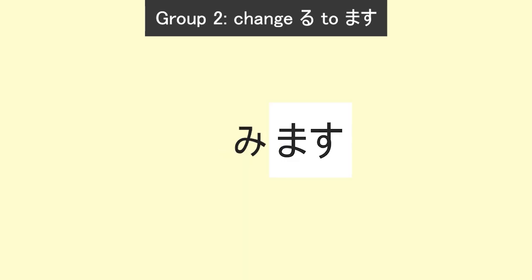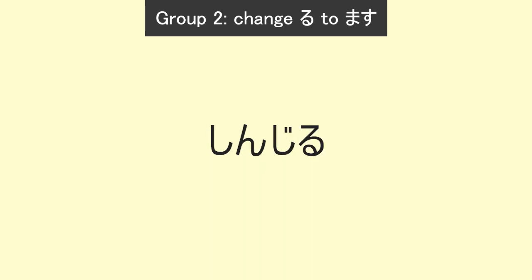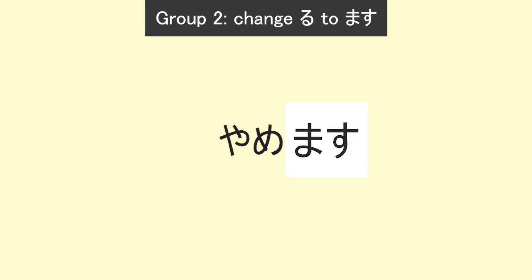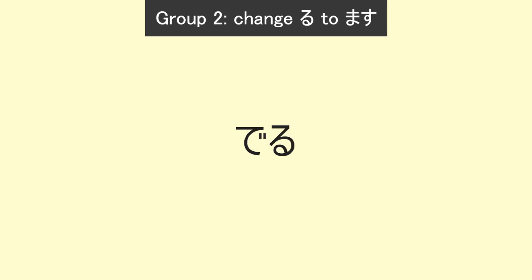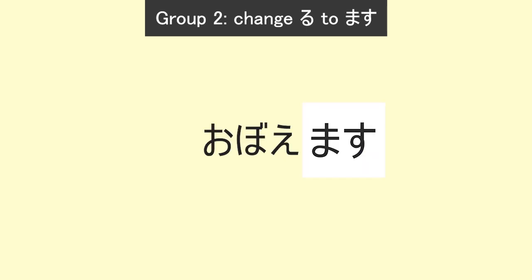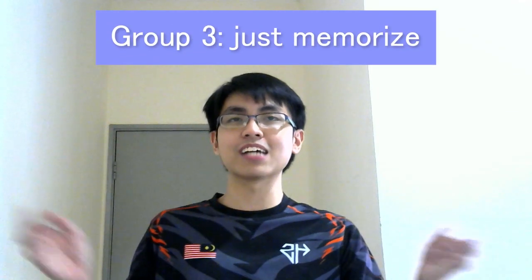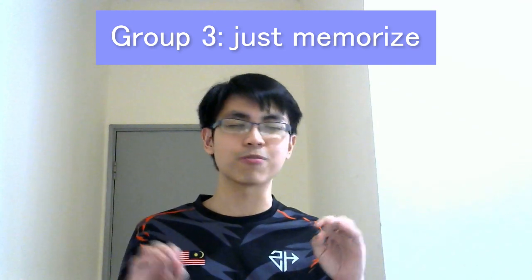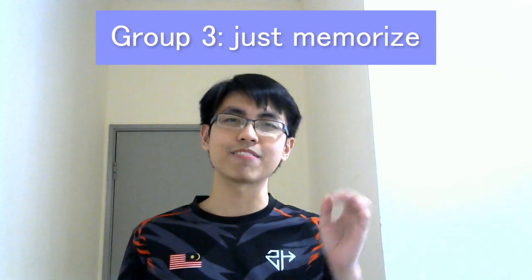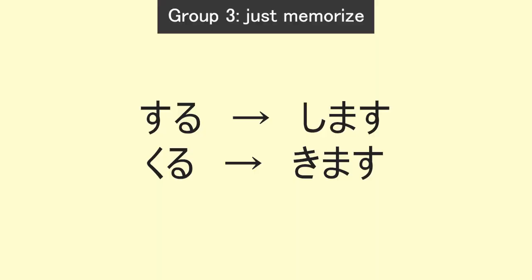More group two examples: miru → mimasu, shinjiru → shinjimasu, yameru → yamemasu, miseru → misemasu, deru → demasu, oboeru → oboemasu. Group three has only two words, and for this one you just have to memorize it.